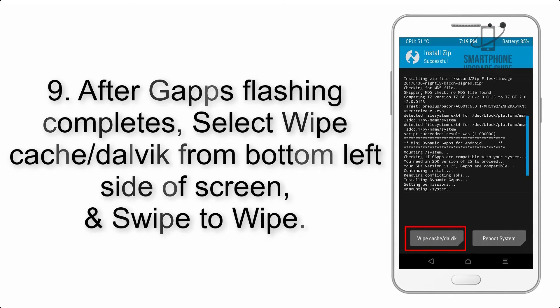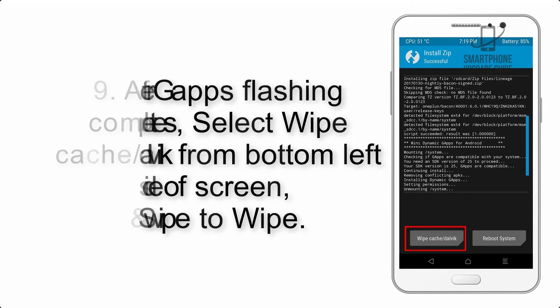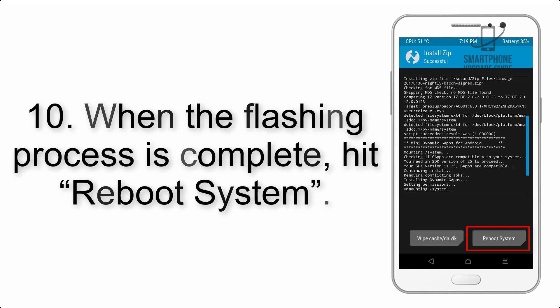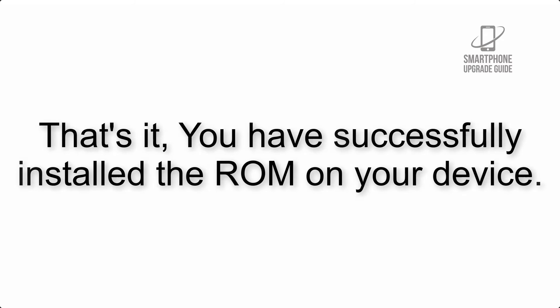Step 8: Flash the GApps zip package in the same manner. Step 9: After GApps flashing completes, select Wipe Cache and Dalvik from the bottom left side of the screen and swipe to wipe. Step 10: When the flashing process is complete, hit Reboot System. That's it — you have successfully installed the ROM on your device.